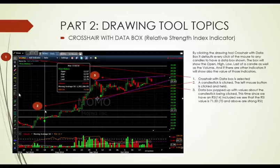Usually a stock showing 70 and upward still has great momentum to be able to continue upward. Just like the previous example, in this case: number one, the crosshair is selected because it's highlighted. Number two, the candlestick being clicked is where the green arrow is. Number three, the data popped up giving you the open, high, low, last price, as well as the volume and the RSI.